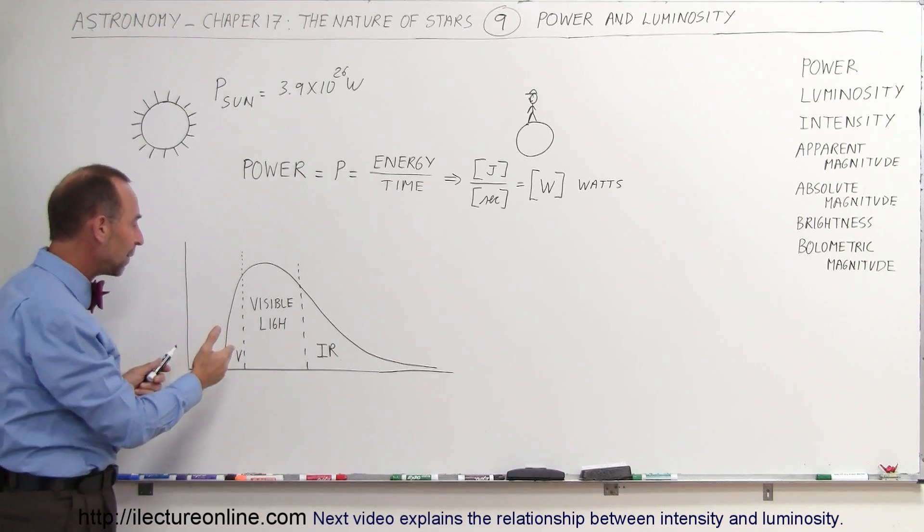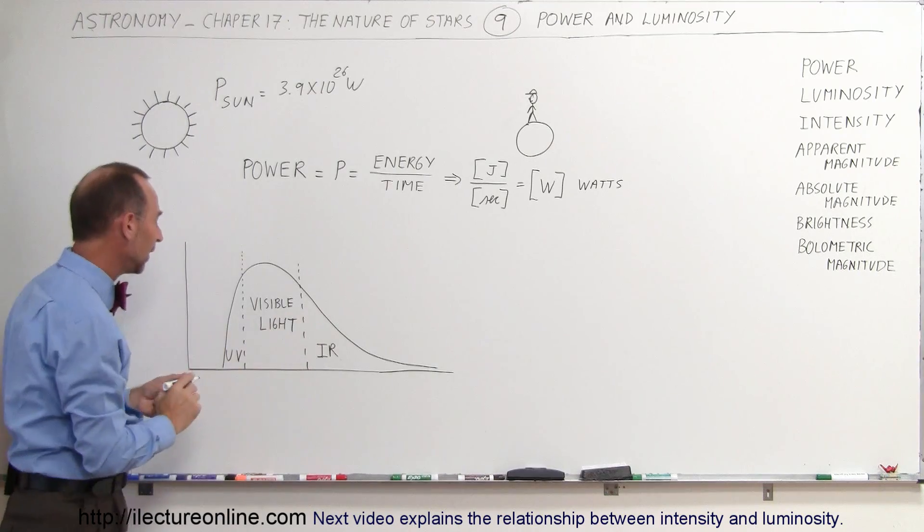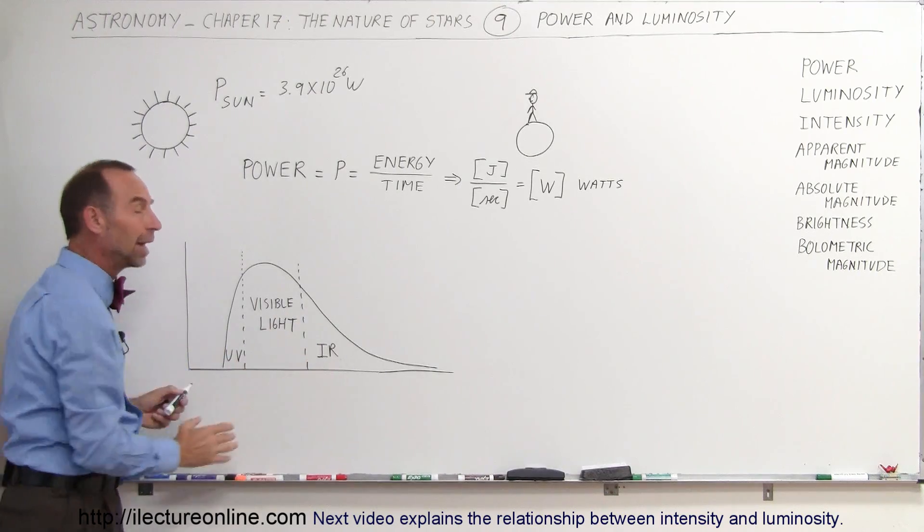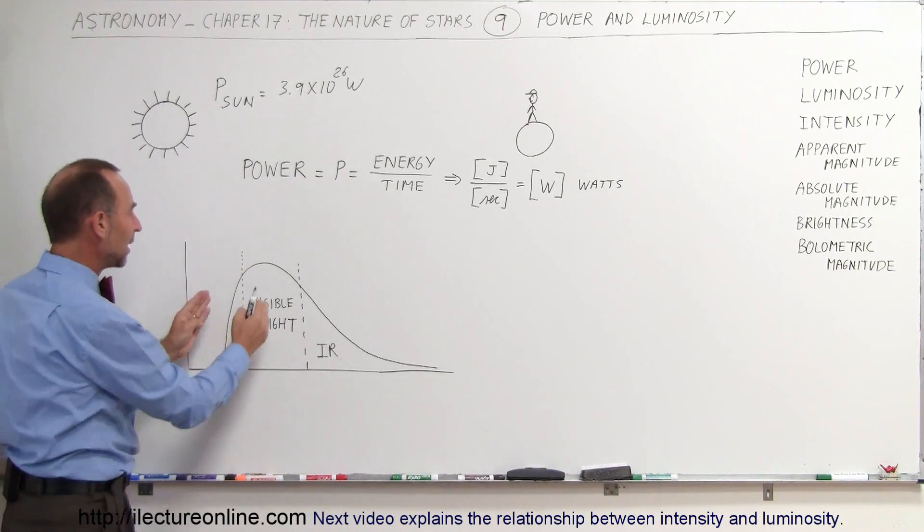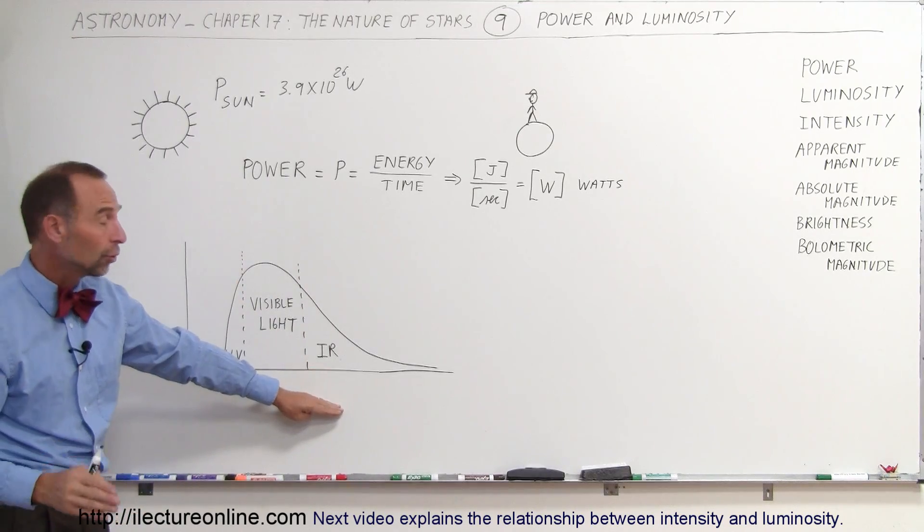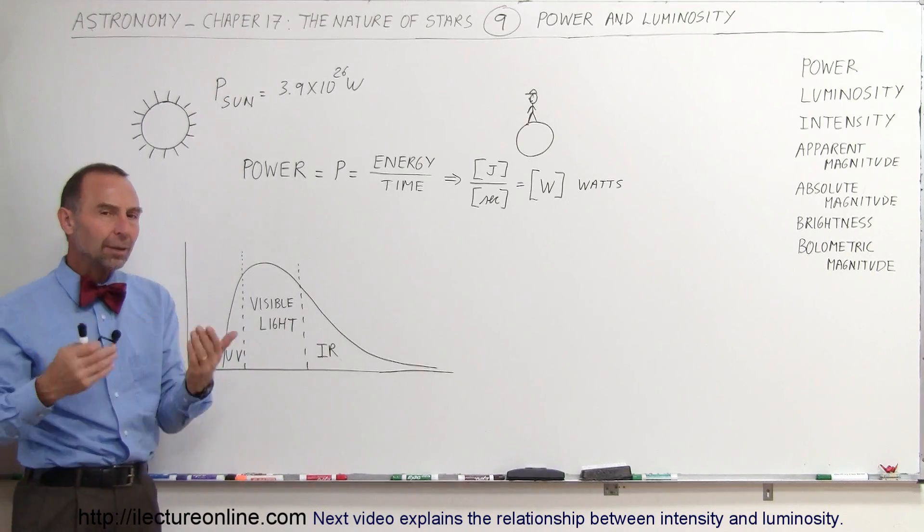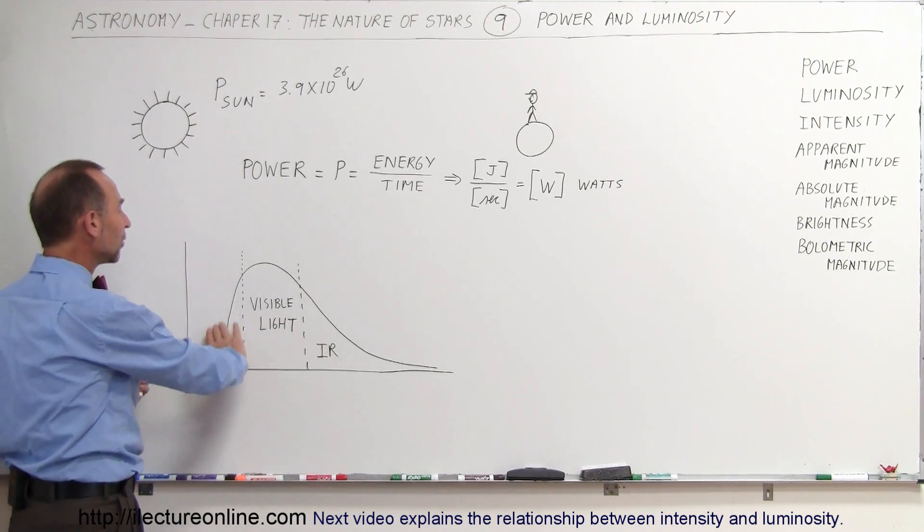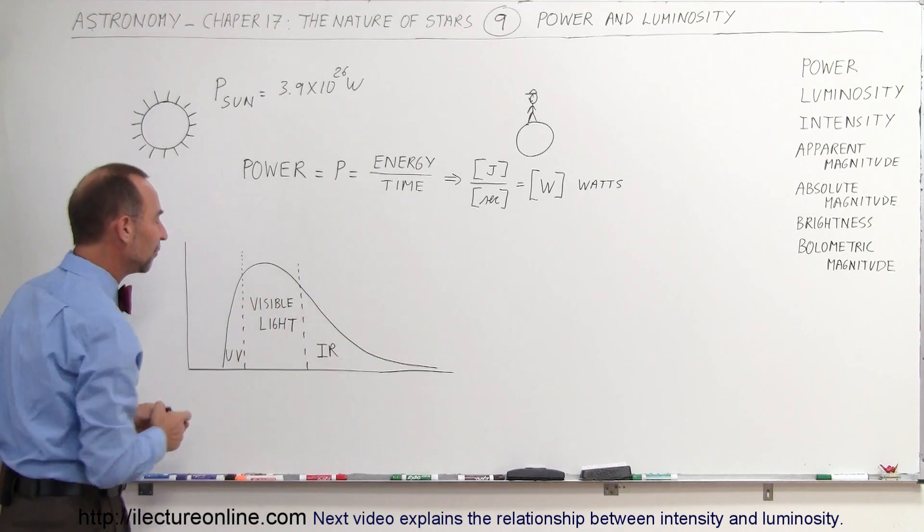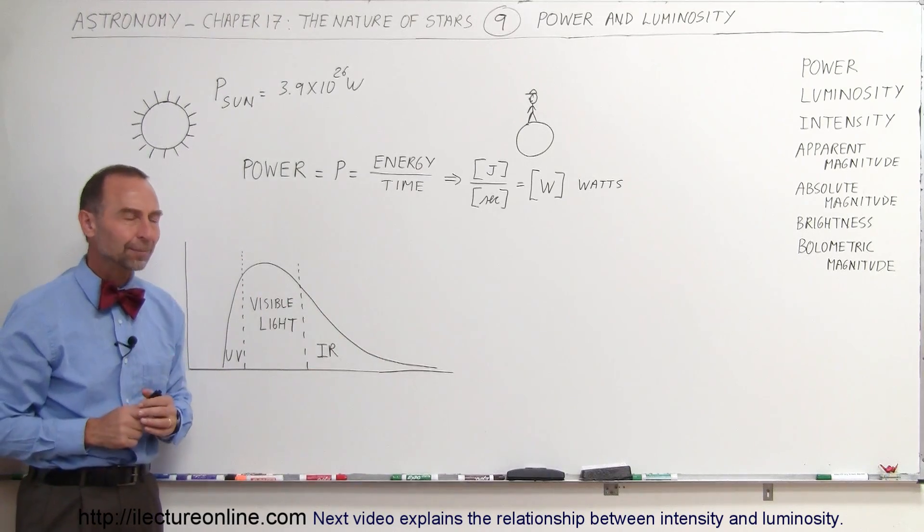That's how many joules per second the Sun emanates every single second. And the Sun emanates most of that power in terms of visible light, UV and infrared. A large portion of the amount of energy from the Sun is indeed in visible light, but a significant portion also is in infrared and in the UV. So when we talk about the power output of the Sun, we talk about all the various energy frequencies, UV, visible light, and infrared that the Sun puts out.